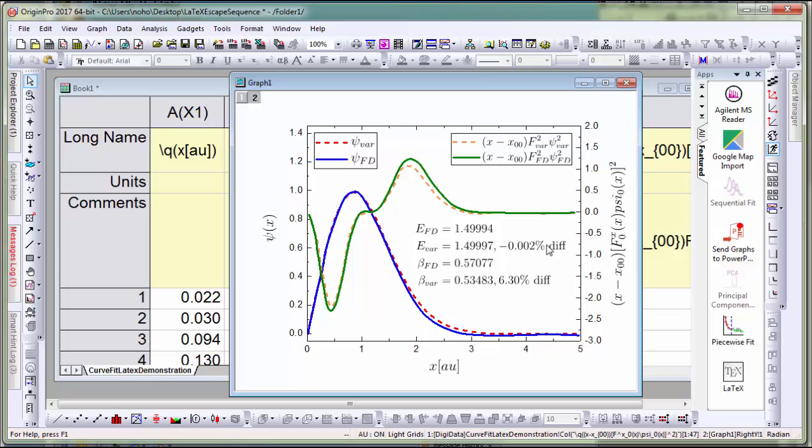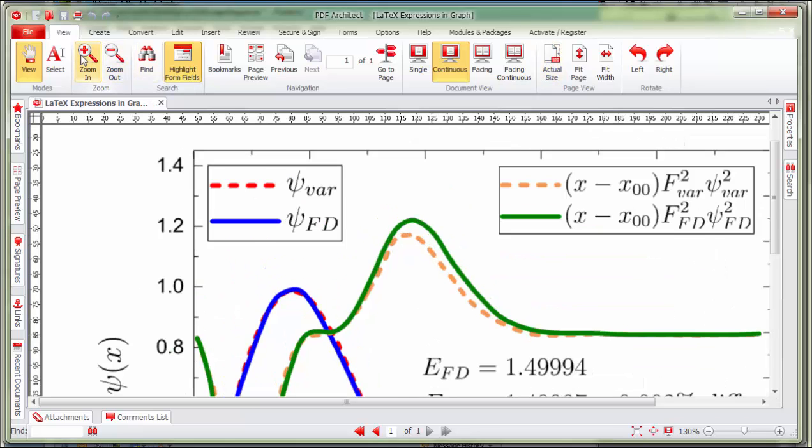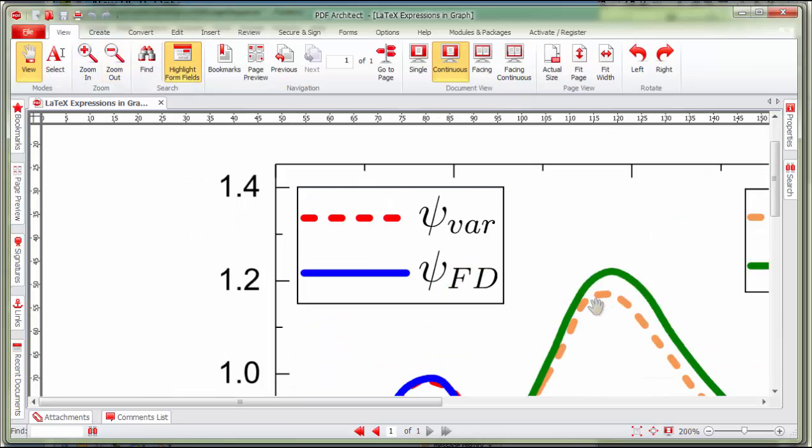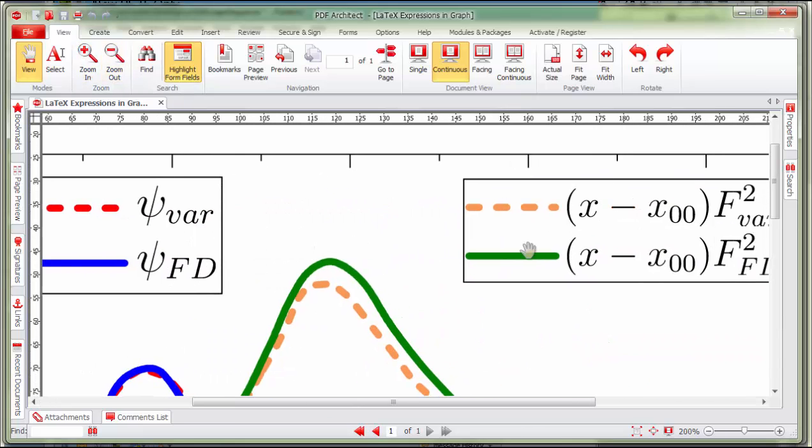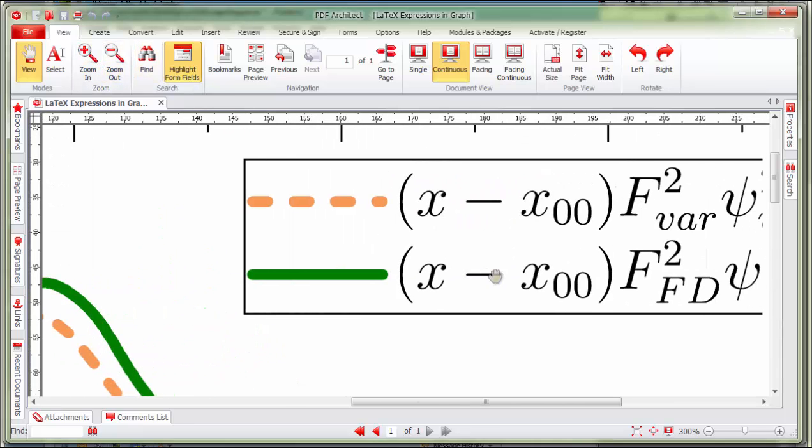Once you have your graph annotated, you can export in vector form. I have this graph exported here as a PDF, and you can see that as I zoom in, the quality looks very good. So what is placed is in fact a vector object, so it scales nicely as you zoom in.